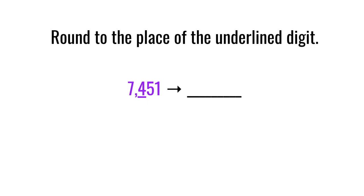In this video you will learn how to round to the place of the underlined digit. For our first example we have 7,451 and we want to round to the place of the underlined digit, which is this four that's in the hundreds place.